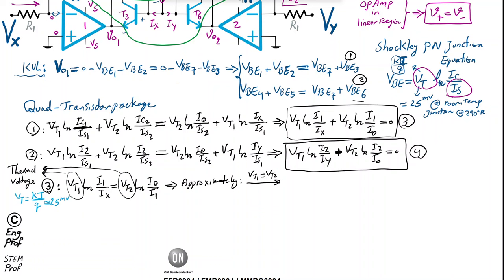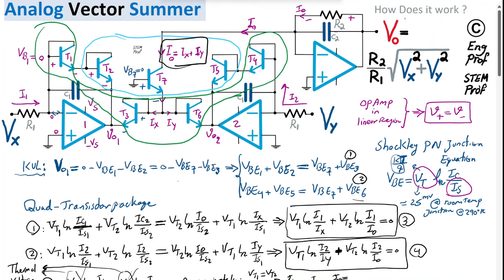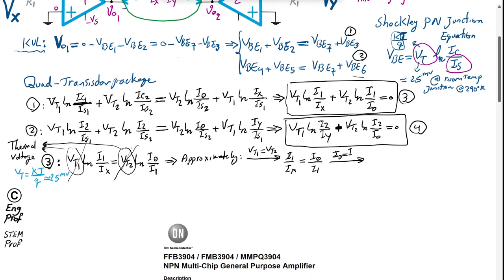With Vt1 ≈ Vt2, equation 3 simplifies to: ln(I1/Ix) = ln(Iout/I1), therefore I1/Ix = Iout/I1, giving I1² = Ix · Iout = Ix · (Ix + Iy) = Ix² + Ix·Iy. This is equation 5.